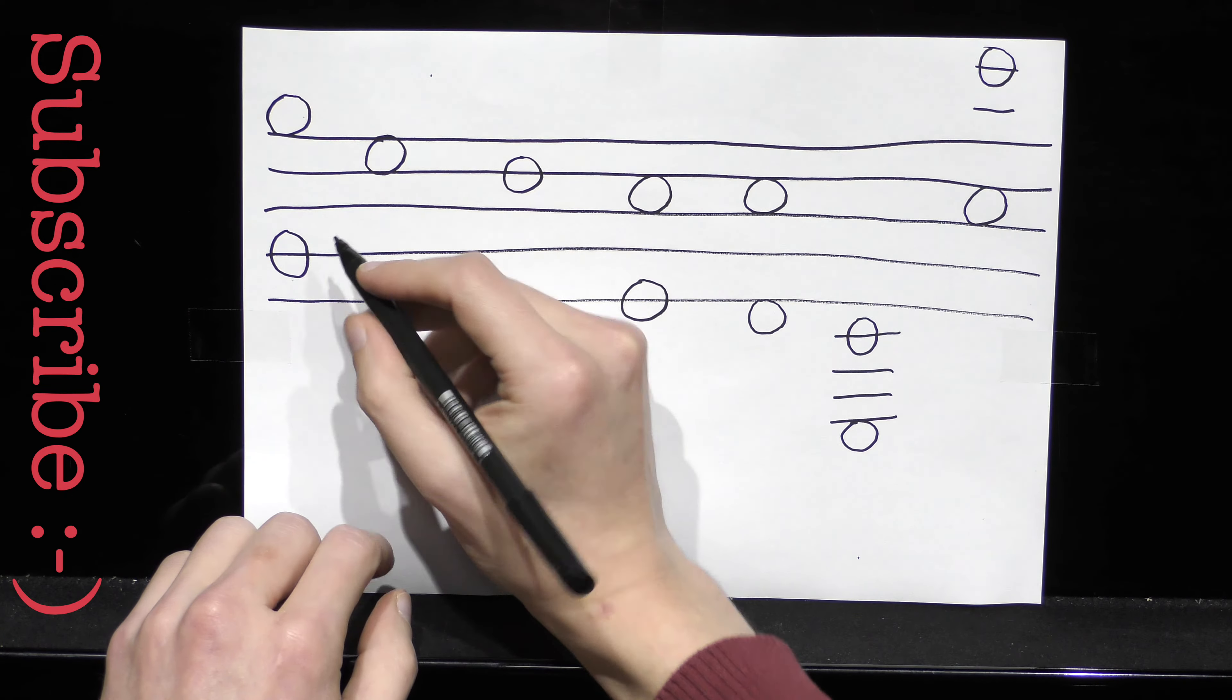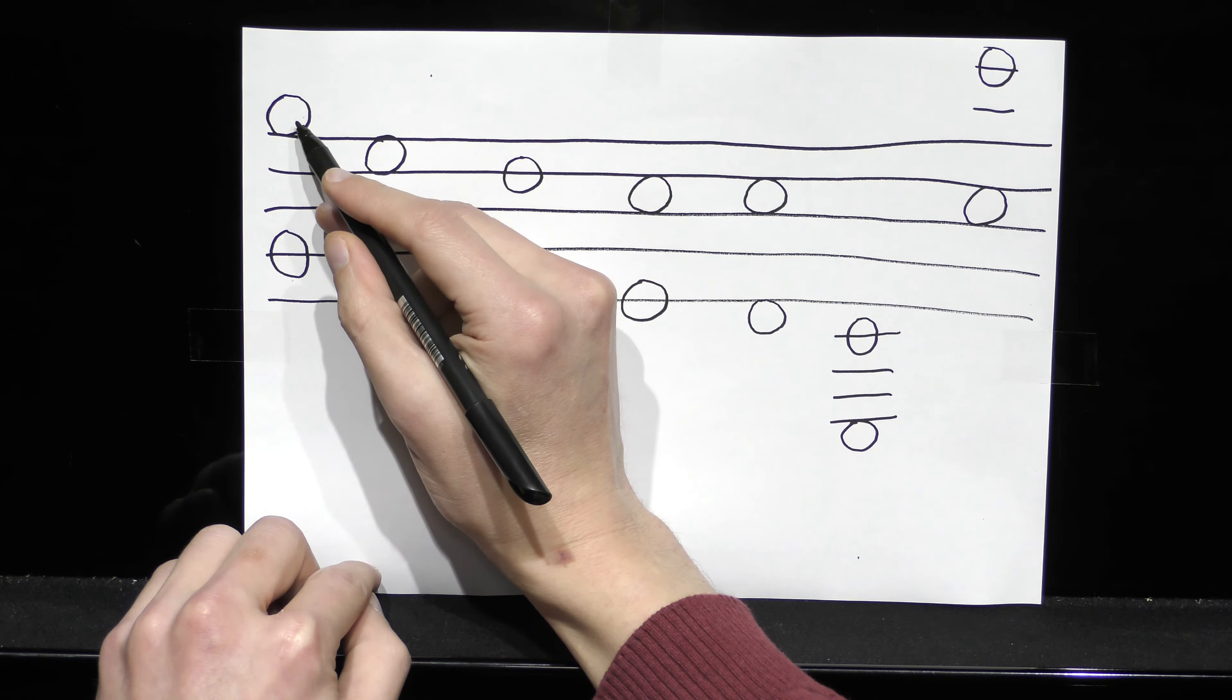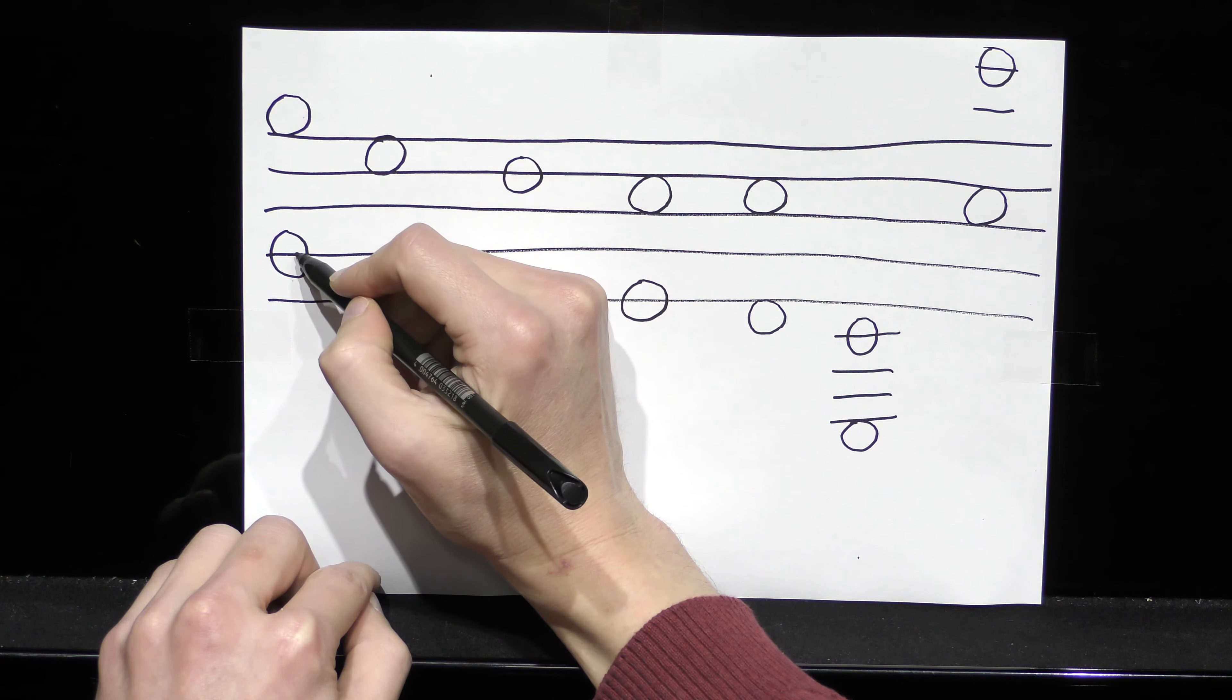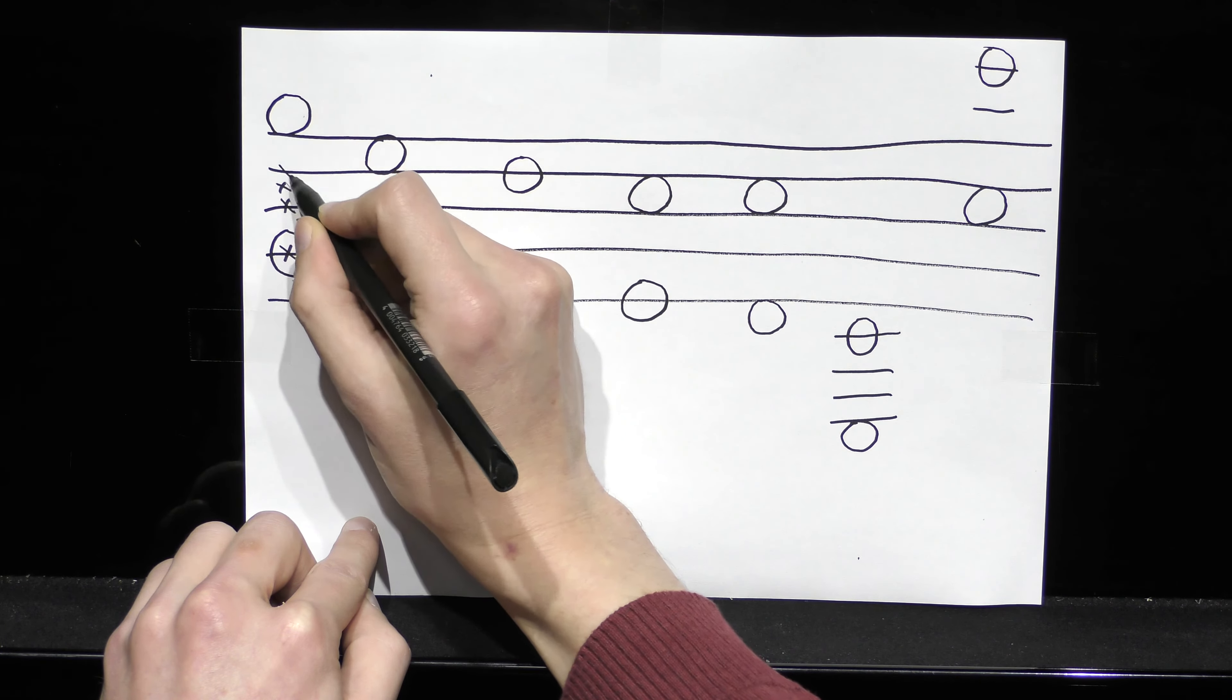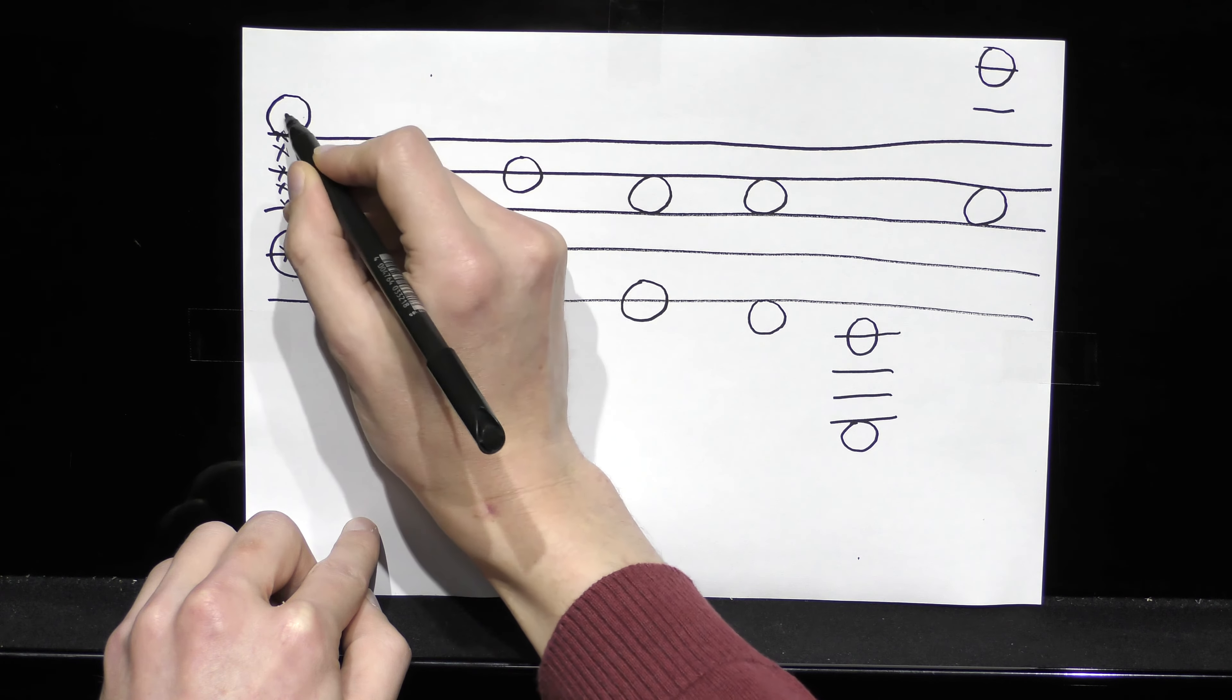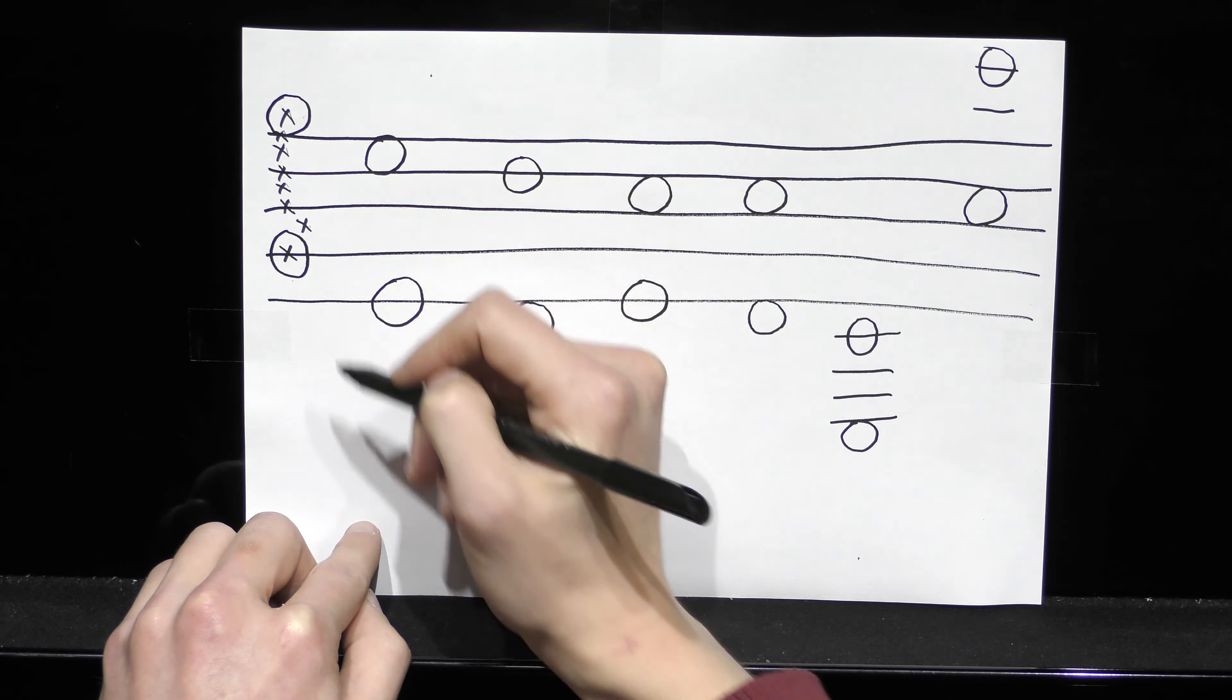So octave meaning eighth means I just need to count the number of lines and spaces that I need to get from the one note to the other. We have one, two, three, four, five, six, seven, eight. So that is indeed an octave.